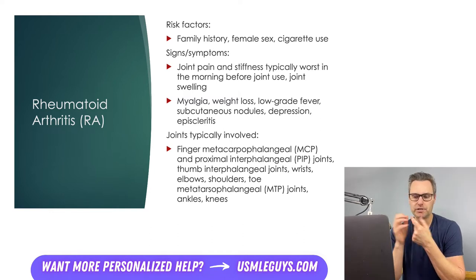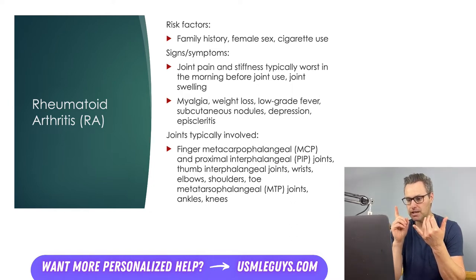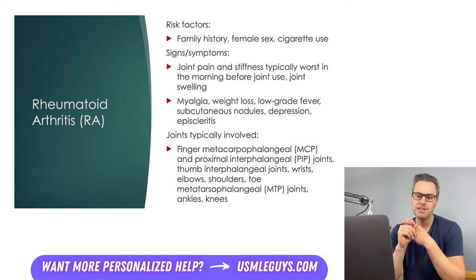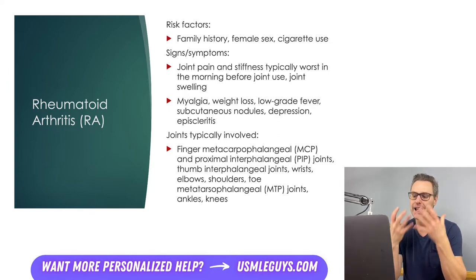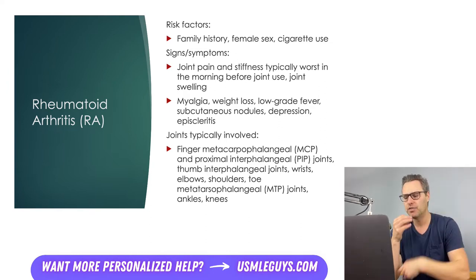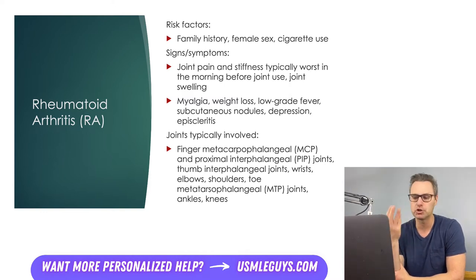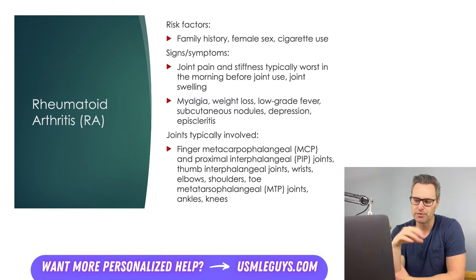With RA, the joints can be painful, stiff, and swollen. The joints most commonly involved include the metacarpophalangeal (MCP) and proximal interphalangeal (PIP) joints of the fingers, the interphalangeal joints of the thumb, and the toe metatarsophalangeal joints. These smaller joints are usually involved initially. Unlike OA, the DIP joints are not typically involved in RA. Larger joints — wrists, elbows, shoulders, ankles, and knees — can also be involved and may appear as monoarthritis rather than polyarthritis.